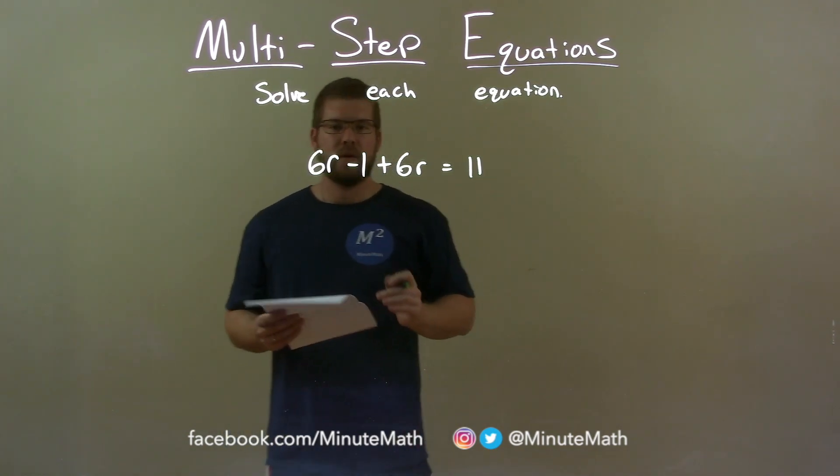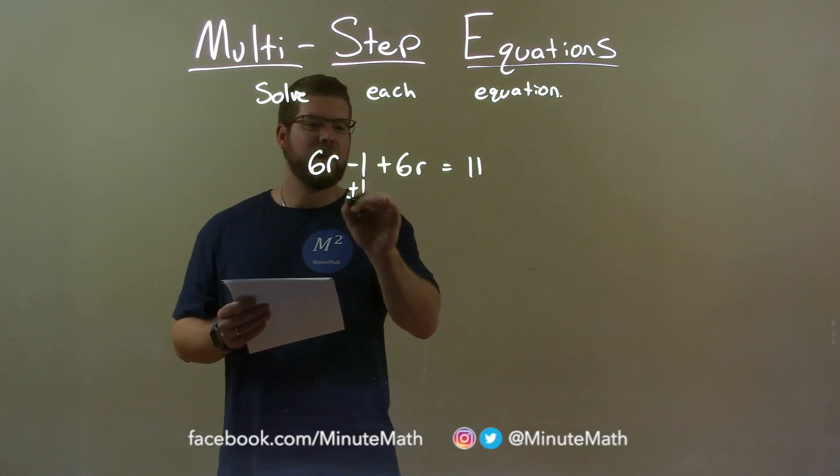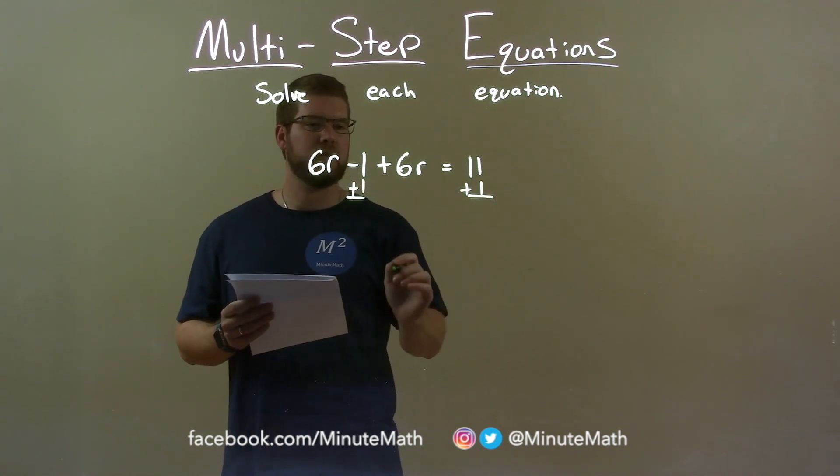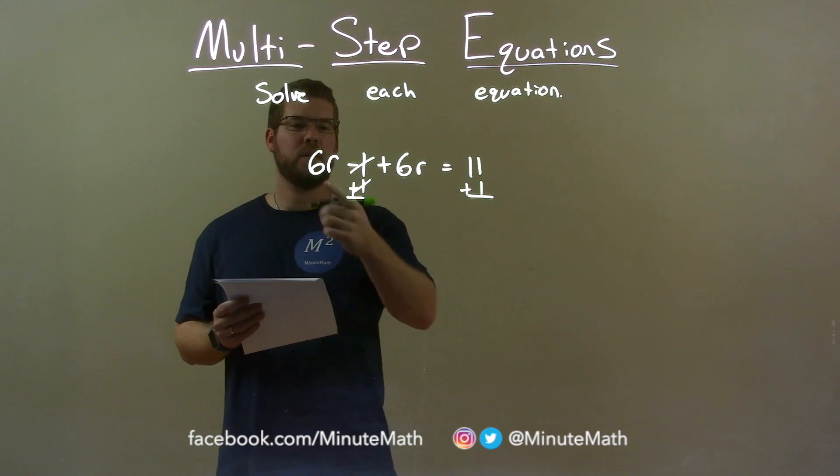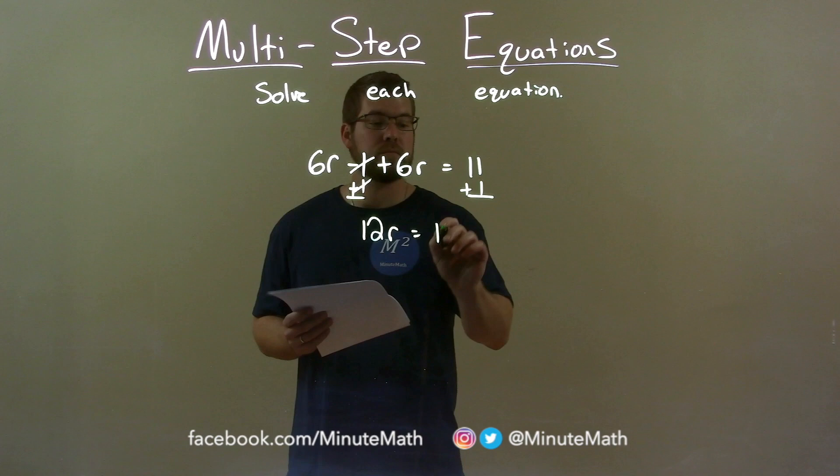First thing I want to do here, I want to combine my like terms and bring them to the right side. So, if I add a 1 to both sides, the 1s cancel over here, and we're left with 6r plus 6r, which is 12r. And 11 plus 1 is 12.